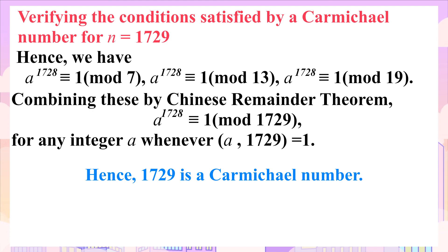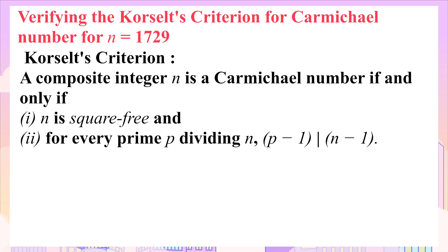We've verified this by using the basic definition and conditions of a Carmichael number. However, there is another way to do that by using a property of Carmichael number called Korselt's criterion. The Korselt's criterion or theorem states that a composite integer n usually greater than 2 is a Carmichael number if and only if n is square free for every prime p dividing n. p minus 1 divides n minus 1.